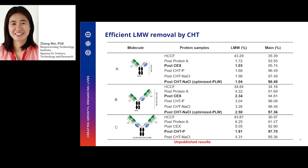Next, let's take a look at low molecular weight species removal. For molecules A and B, cation exchange showed better LMW removal initially, but LMW removal could be improved by adding an optimized load wash for CHT. For molecule C, CHT phosphate gradient elution provided the best LMW removal. After one-step CHT polishing, all eluate purity reached 97% and above.